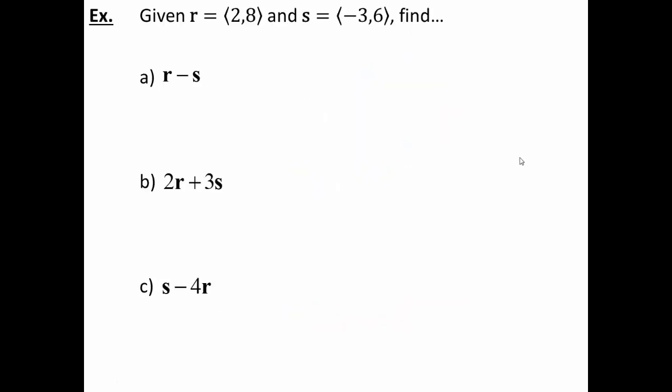Why not just do it that way? So if I want to subtract vectors r minus s, remember subtraction is just adding a negative. So I can just do it the same way. So r minus s is really just 2 minus -3 and 8 minus 6. Which gives us (5, 2).